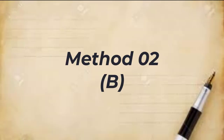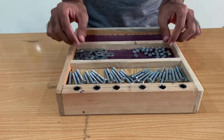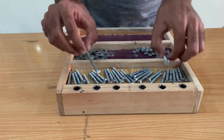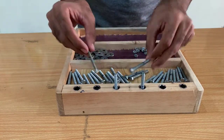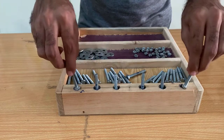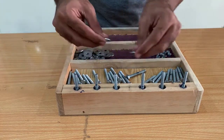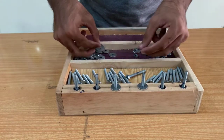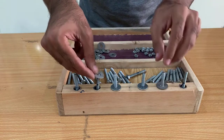Method 2B: To perform today's lab. In Method 2B, we use an assembly board with three partitions. In the first partition we place bolts and arrange all bolts in the same way. In the second partition we place washers and nuts, and in the third partition we place the final assembly.